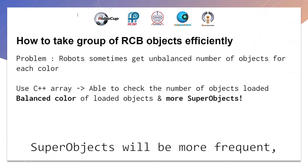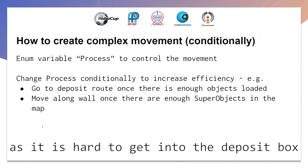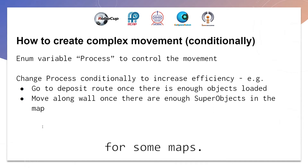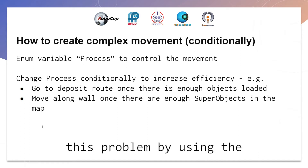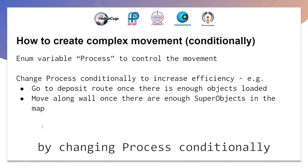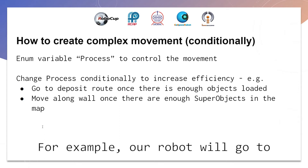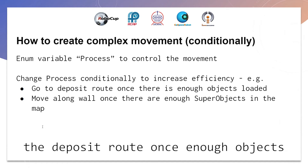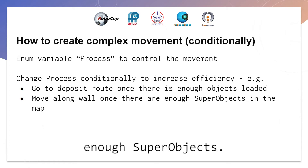Super objects will be more frequent and the points will grow. Second, we sometimes need the robot to move in complex ways, as it is hard to get into the deposit box for some maps. We solved this problem by using the enumerate variable 'process'. We can program complex movement by changing 'process' conditionally and assigning routes to each process. For example, our robot will go to the deposit route once objects are loaded, and move along the wall if there are super objects.